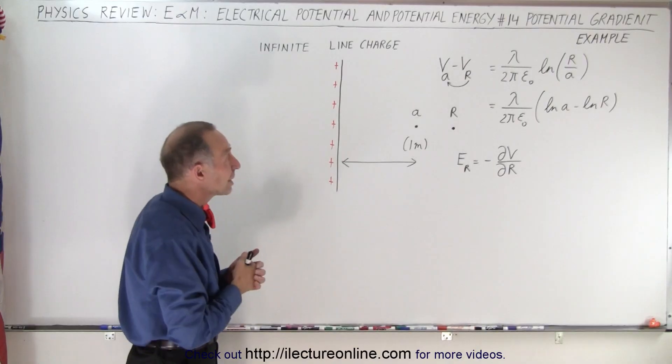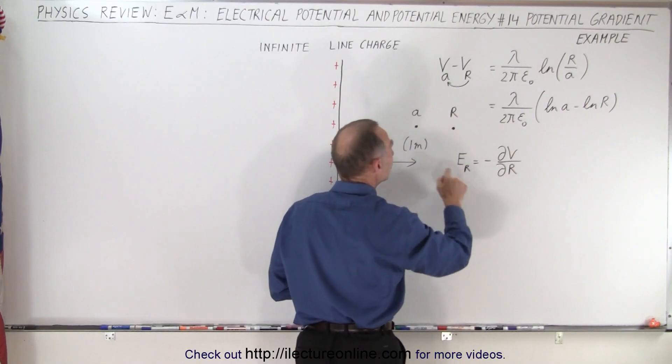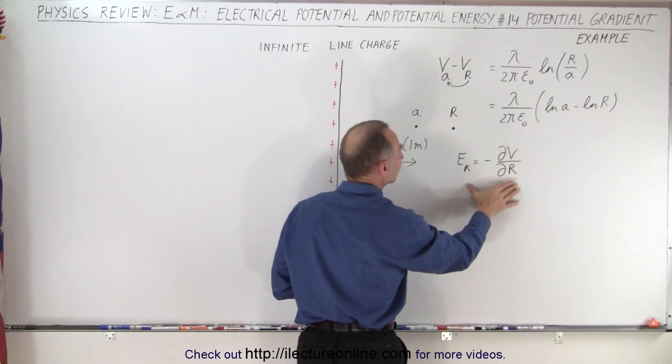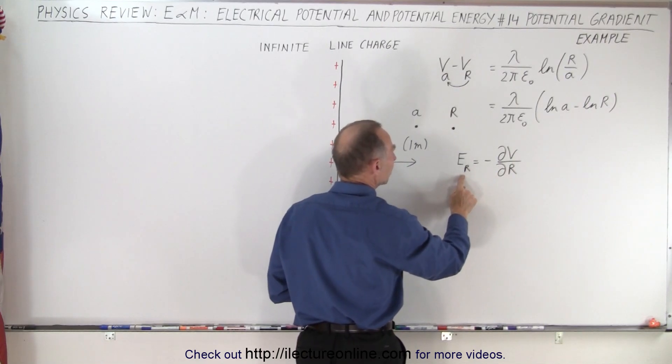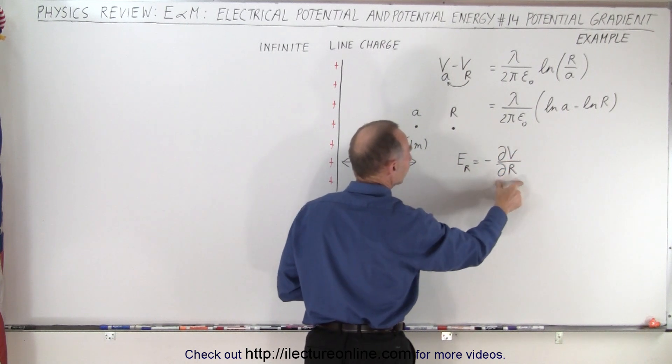What we're going to do here is try to find the electric field at that location by using the definition of the gradient. We know that the electric field strength is going to be equal to the negative partial derivative of the potential divided by R.